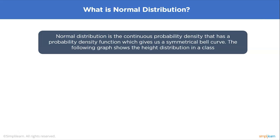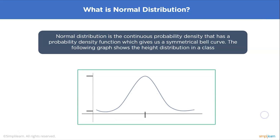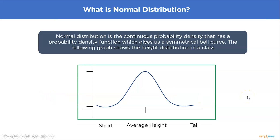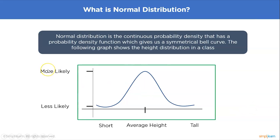Let's look at a graph showing height distribution in a class. The average height is in the middle; data to the left represents shorter people and to the right represents taller people. The y-axis shows the likelihood of any height occurring, and the average height has the most cases in the class.